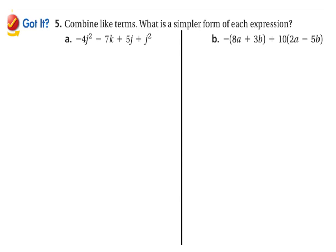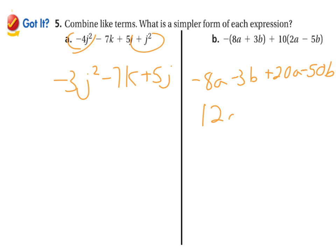Same sort of problems, combining like terms. Again, you don't have to move them around. You might just look at it and say okay, I've got a negative 4j squared and a j squared, that's negative 3j squared minus 7k and a plus 5j. So those two aren't like terms. Here we have to do a little distributing. So minus 8a minus 3b, distribute the 10 as well, so plus 20a minus 50b. So we can combine the a's, we get 12a, and combine the b's, negative 53b.